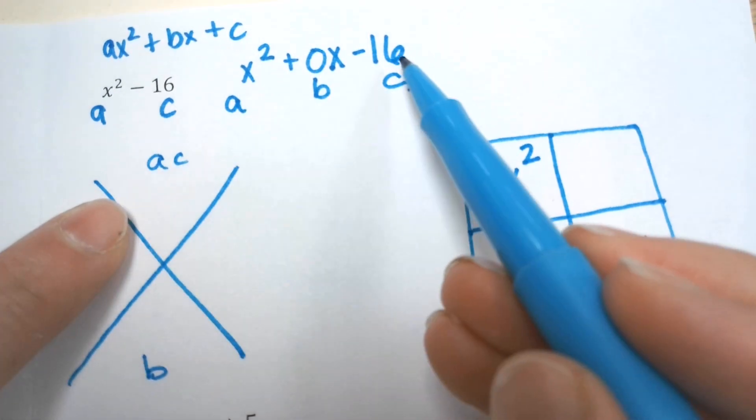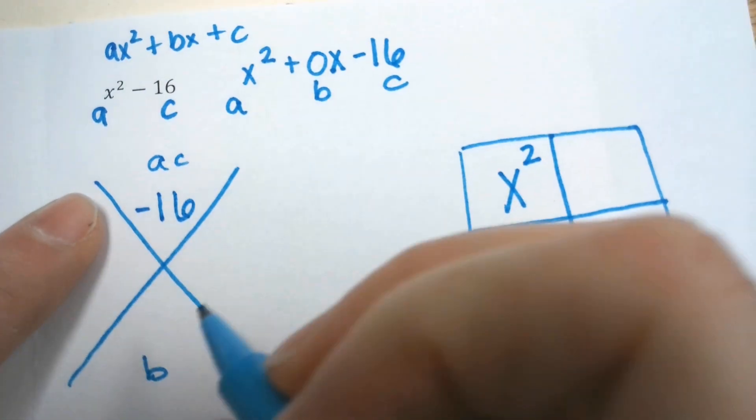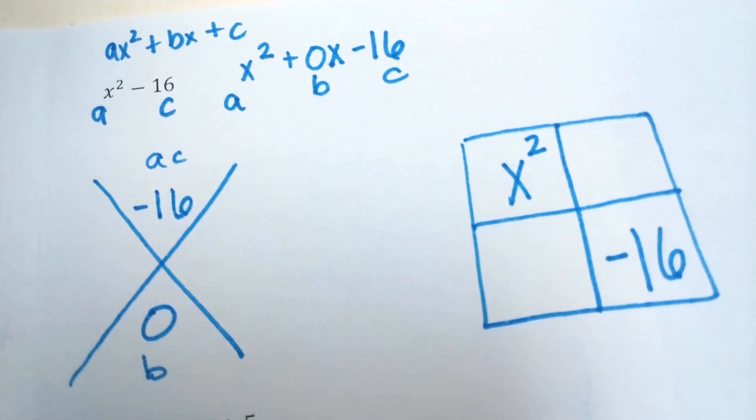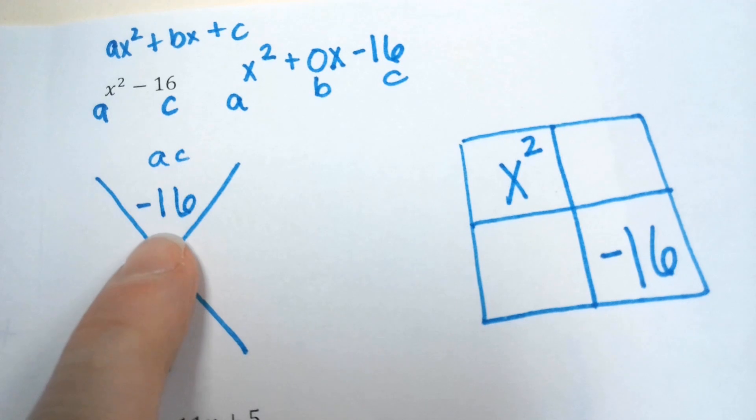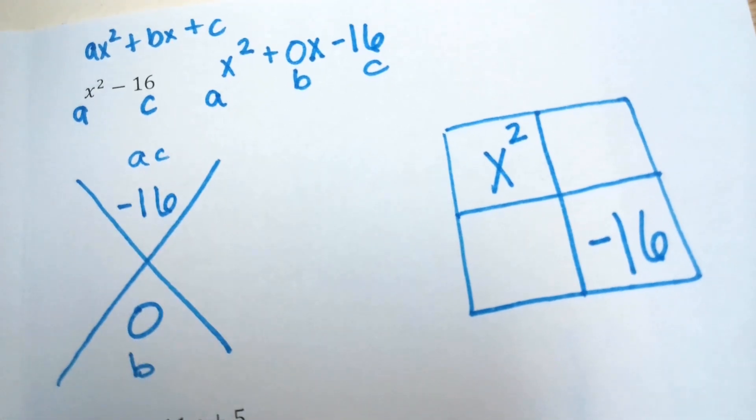A times C would be 1 times -16, which gives us -16, and B is 0. So we do the X game, where we figure out what multiplies to get -16, but adds to get 0.